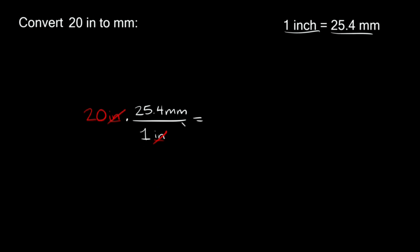Now if we simplify this, all we have to do is multiply these two together, multiply straight across. On top we have 20 times 25.4, and we still have our units, millimeters. That's going to go over whatever we have on the bottom, which is just one.